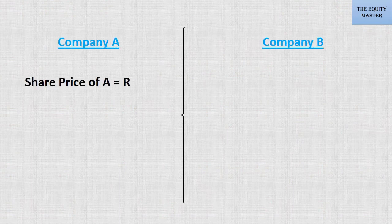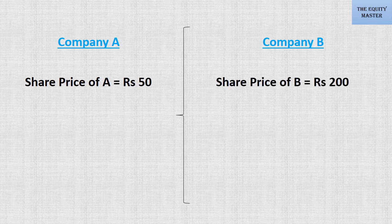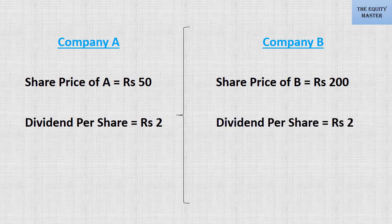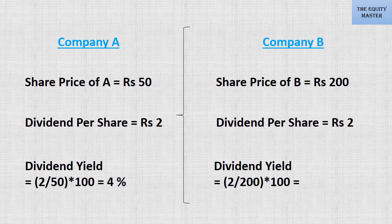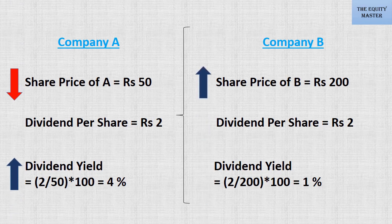Let's consider another example. Let there be two companies A and B. Share price of A is 50 and share price of B is 200. Both companies announce the same dividend amount per share, that is 2 rupees. Dividend yield of company A equals 2 divided by 50 into 100, which is 4%. Dividend yield of company B equals 2 divided by 200 into 100, which is 1%. Note that when share price decreases, dividend yield will increase, and when share price increases, dividend yield will decrease.